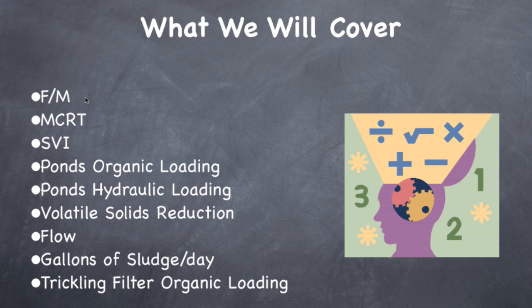What we're going to be covering today is F/M, which stands for Food to Microorganism Ratio. We're going to be going over MCRT, which is Mean Cell Residence Time. And these two kind of are the ones that operators are scared of. You have nothing to worry about. These are really simple problems. I'll explain them in a really good way to help you out. Next, what we're going to be going over is SVI, which is Sludge Volume Index. Then we're going to do ponds organic loading and ponds hydraulic loading. Then after that, we're going to be doing volatile solids reduction for our digesters. We're going to be calculating the flow through a channel. How many gallons of sludge is settling out into a primary clarifier per day and a trickling filter organic loading. So let's start.